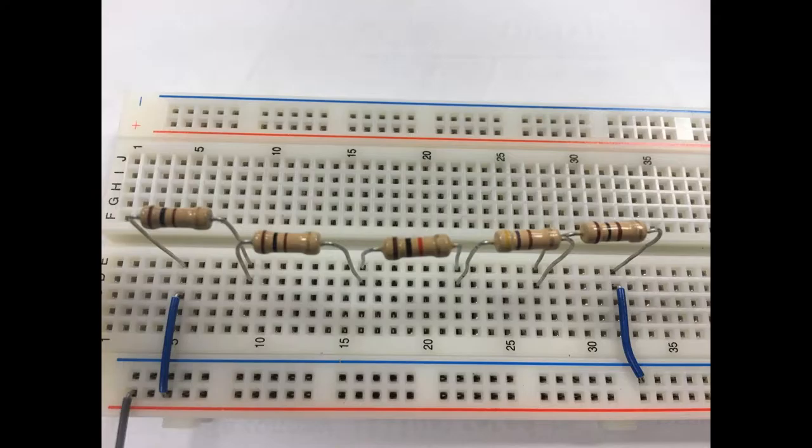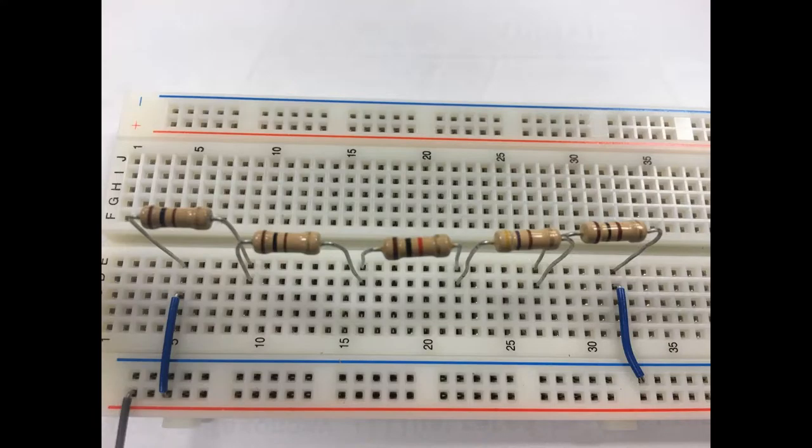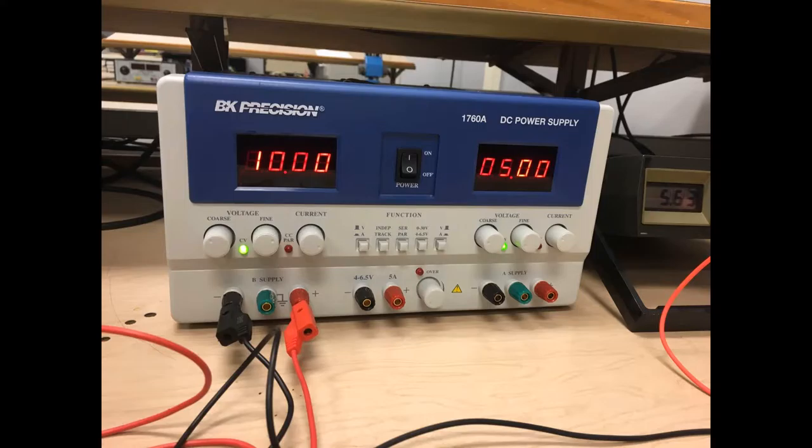We can verify the resistance of each resistor by using a chart shown on the screen to the right or using a multimeter and checking each one individually using the ohm setting. In order to power our circuit, we are using a variable power supply set to 10 volts DC as represented by the diagram to the right.